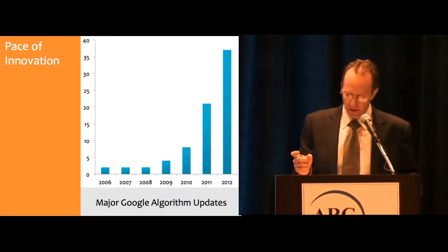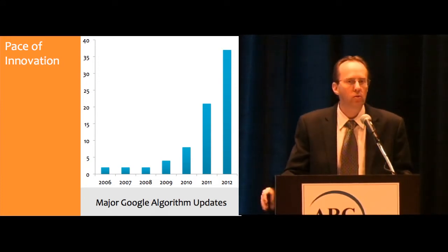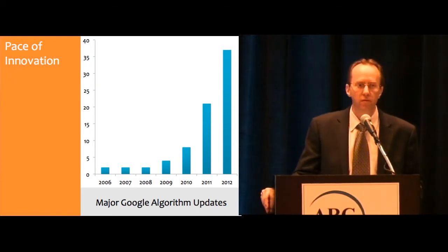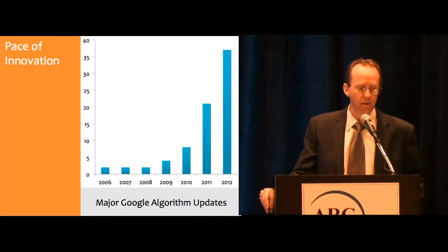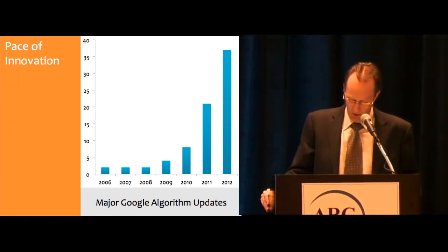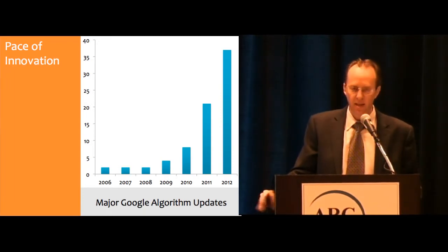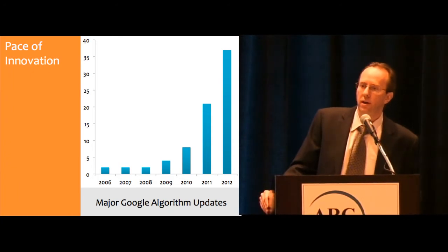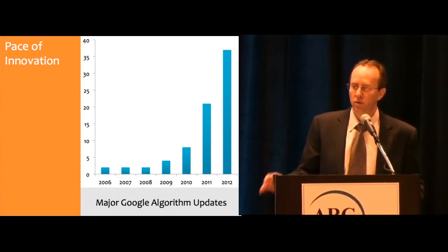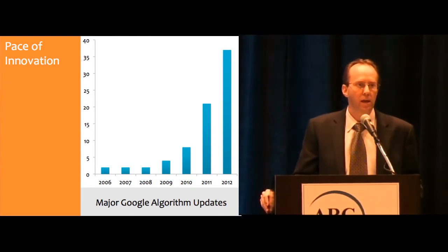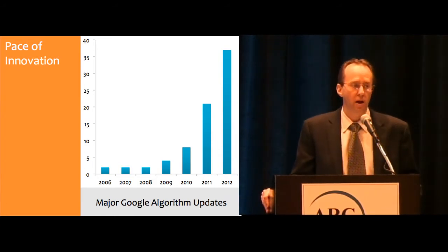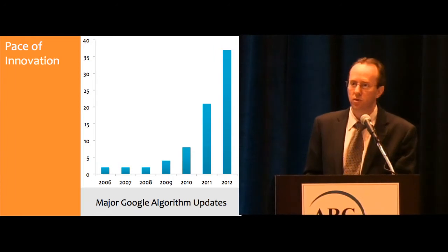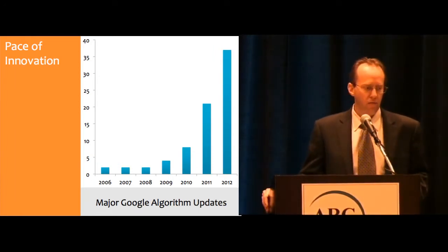To wrap up this part about the changing pace of innovation, here are some graphs that provide visual evidence of this acceleration. This shows the number of major Google algorithm updates per year going back to 2006 — and as you can see, that's not linear, it's geometric. As a practical matter, at least half of the SEO techniques a company was using three years ago you can just throw out — they don't work anymore. You have to review your marketing strategy at least quarterly, if not monthly.